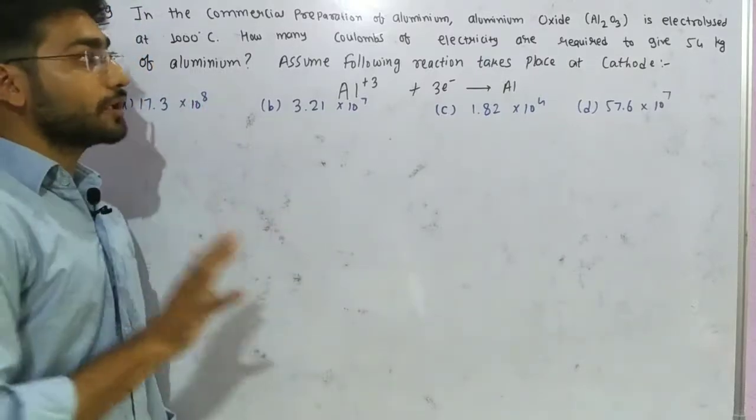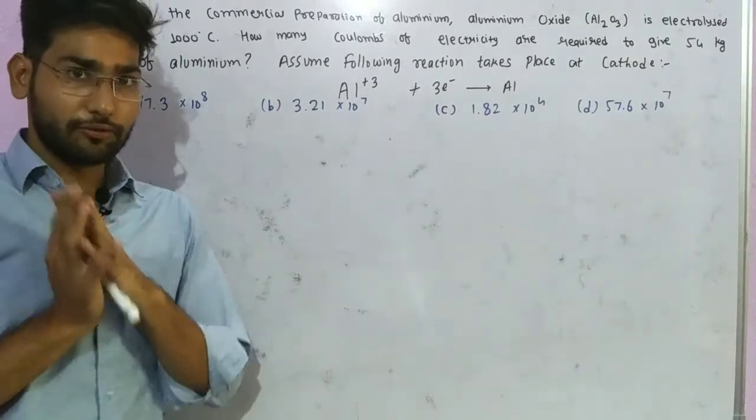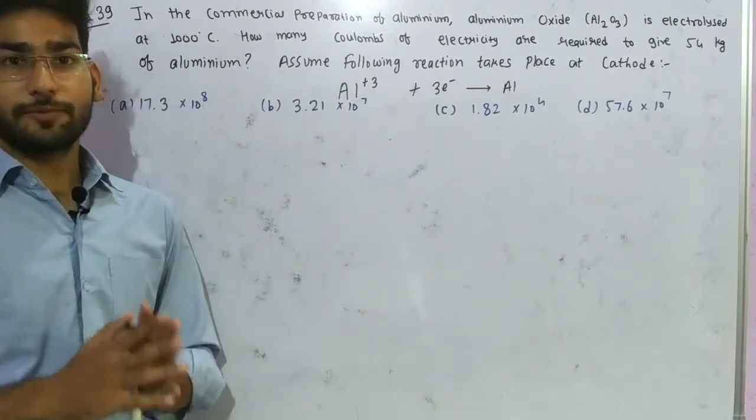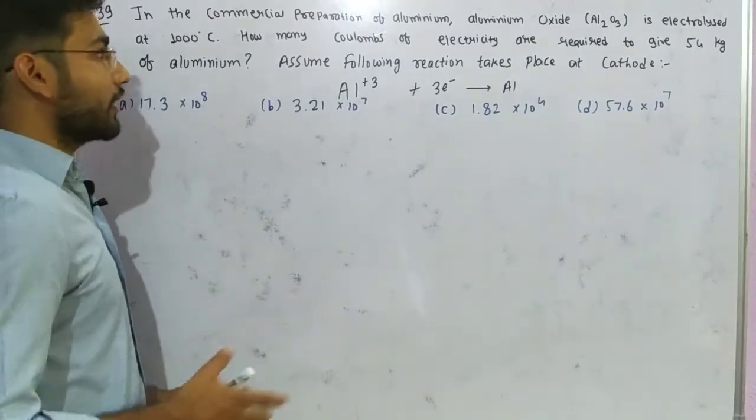If 54 kilograms of aluminum needs to be deposited using electrons, then how much charge needs to pass? We need to calculate the charge required.